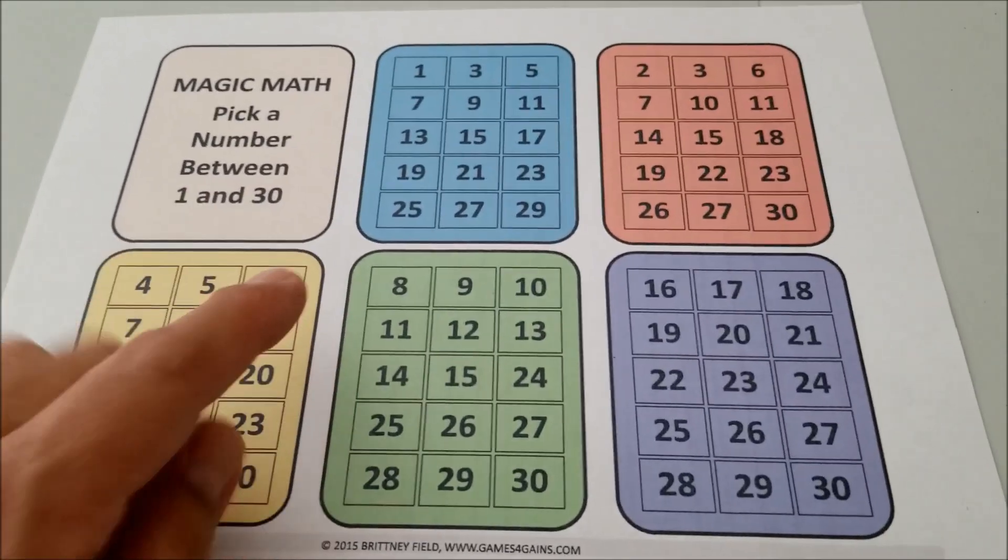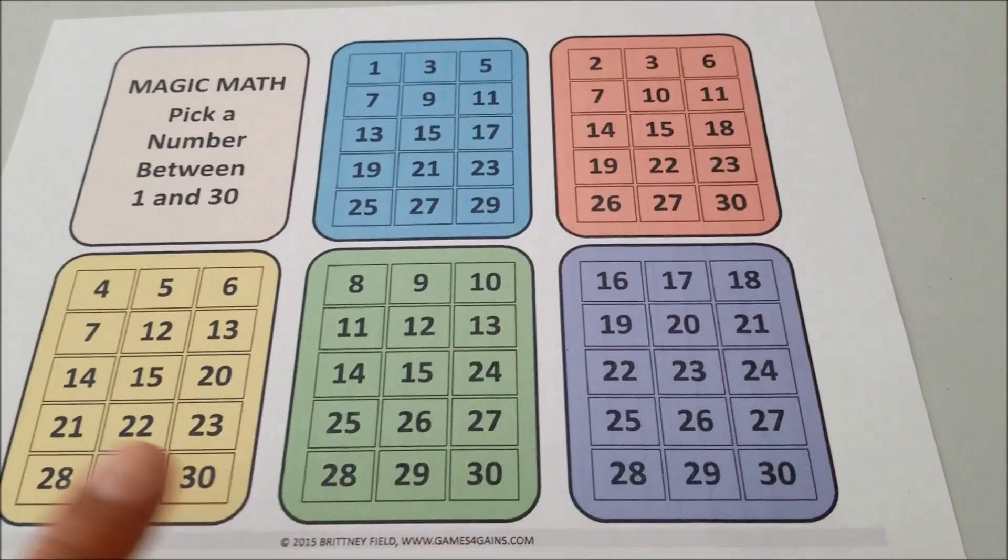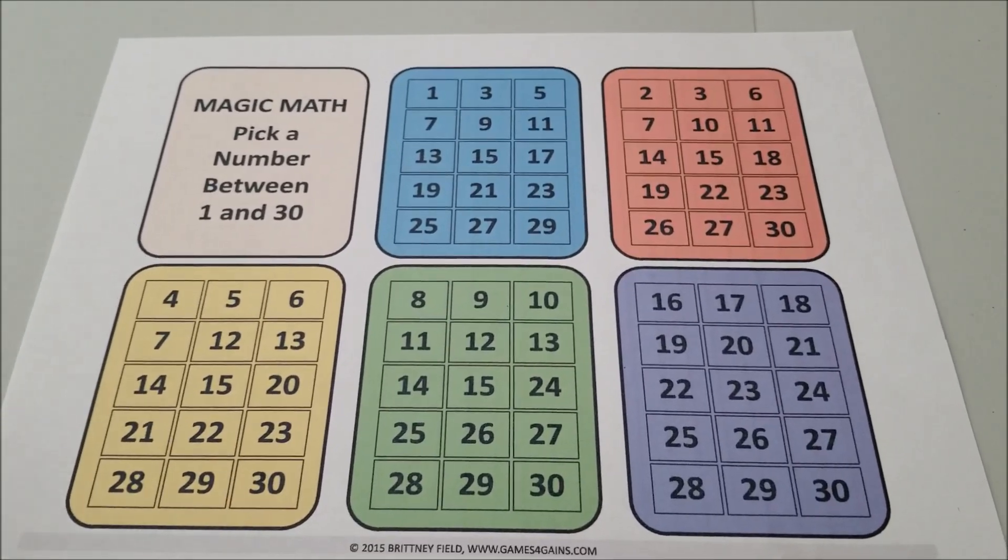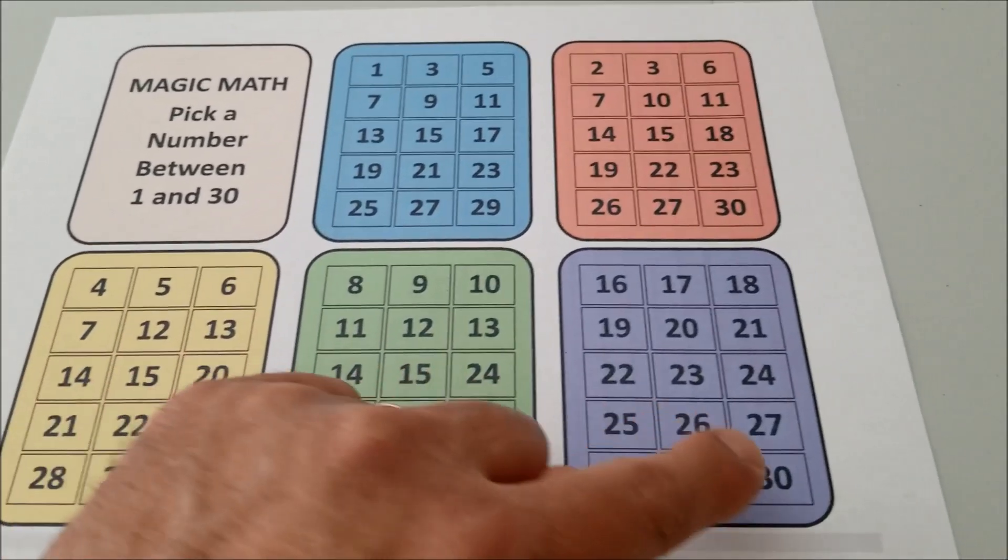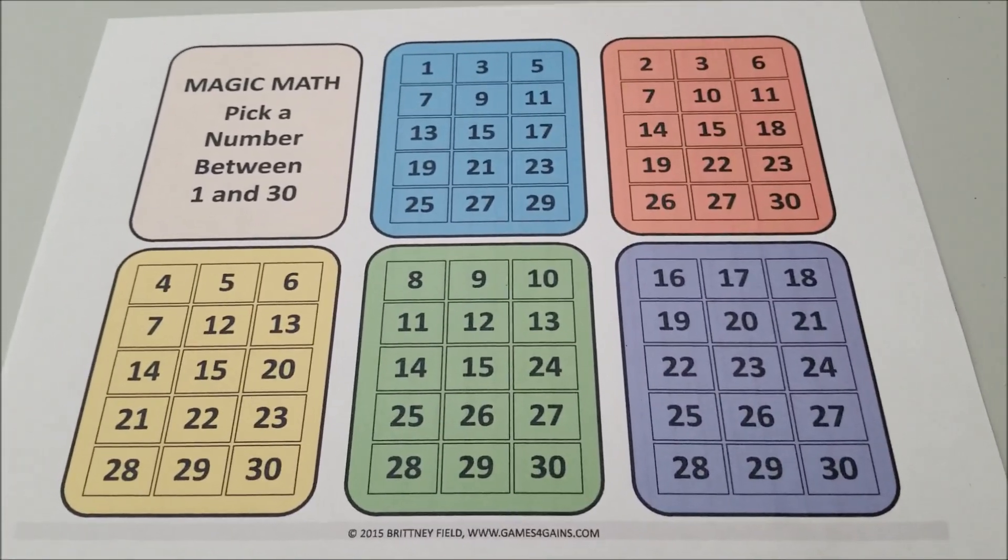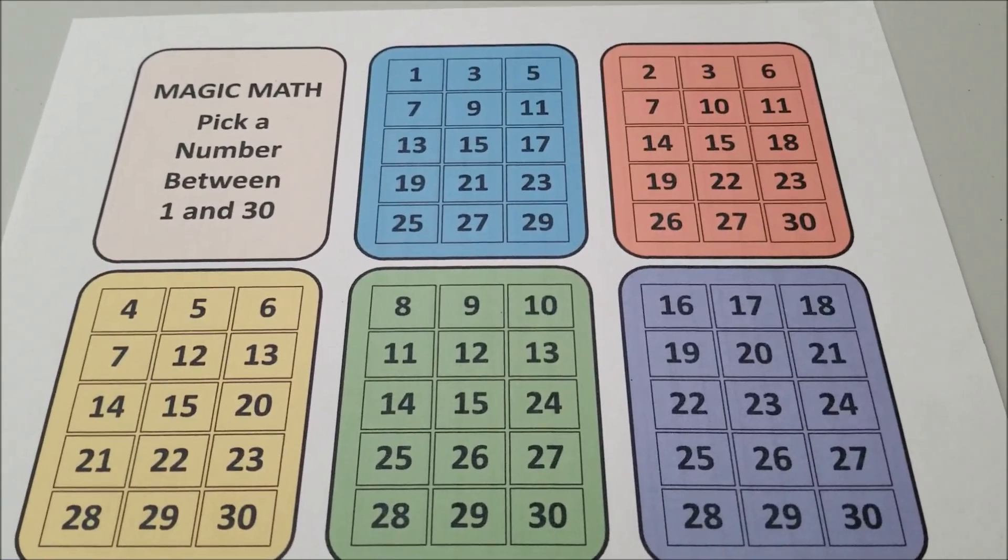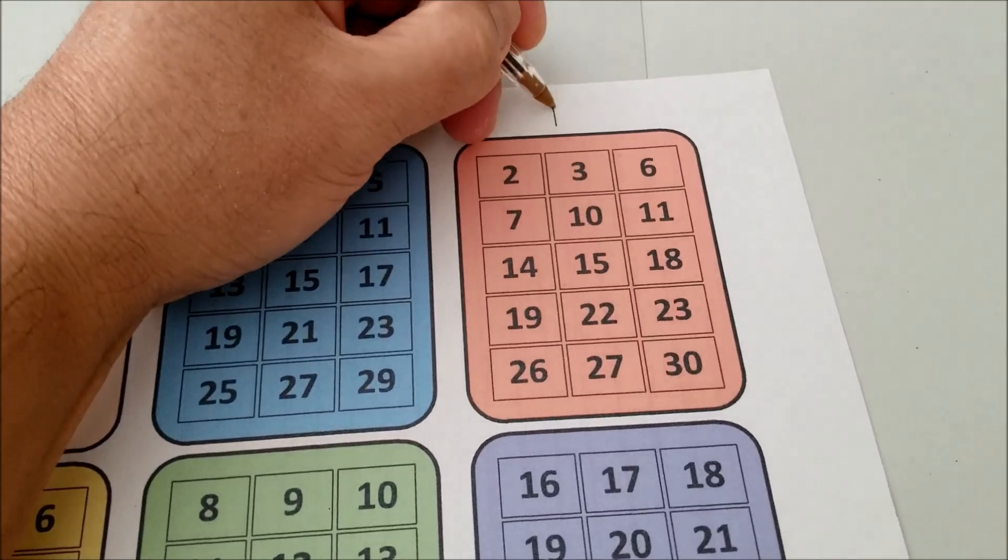So when you think of a number between one and 30, here's what you do. You look throughout all of the boxes to see which box your number appears in. Now to make this easier for the person doing the trick, it might be better to put an A, B, C, D, E on these boxes. So when the person tells you which box your number's in, it's easier to just tell them that. So let's go ahead and write it anyway.